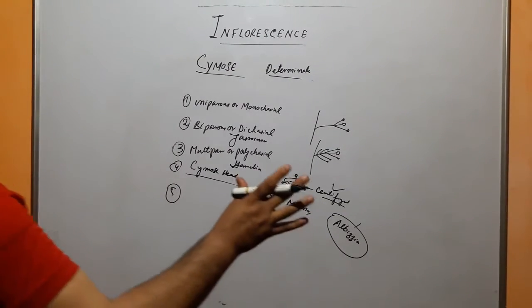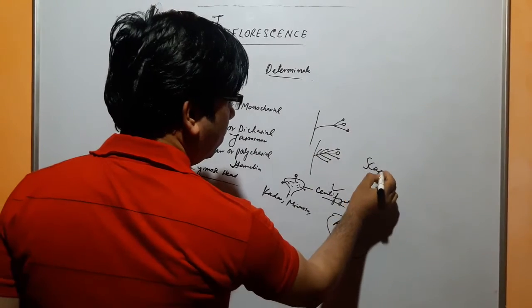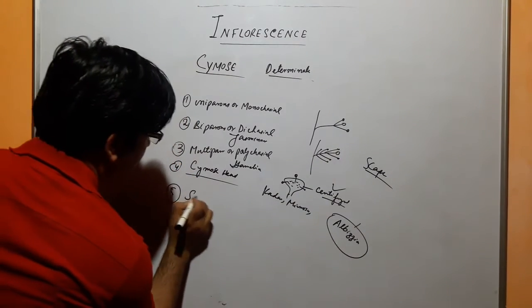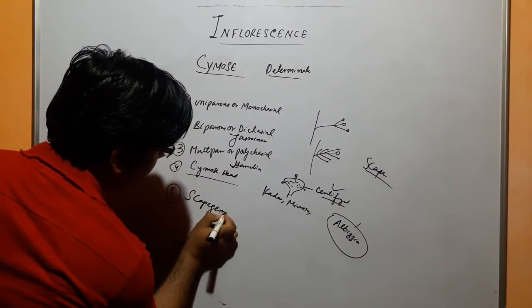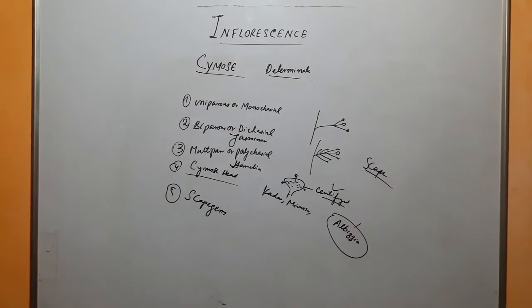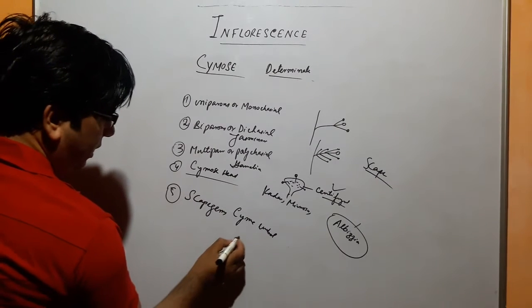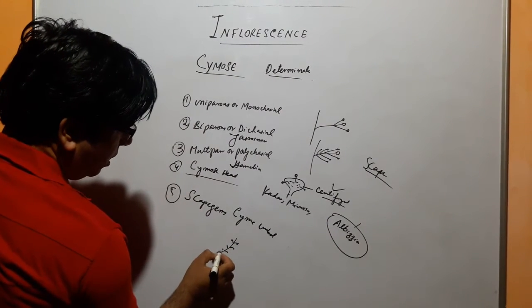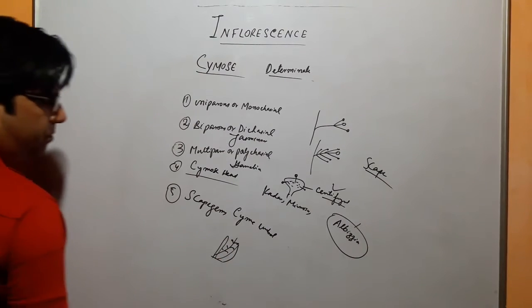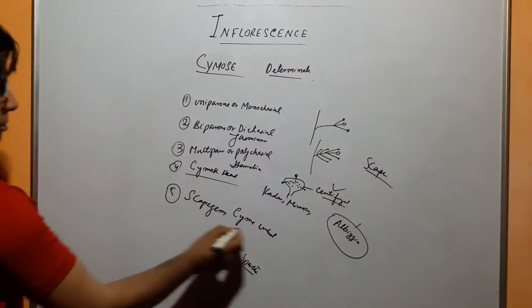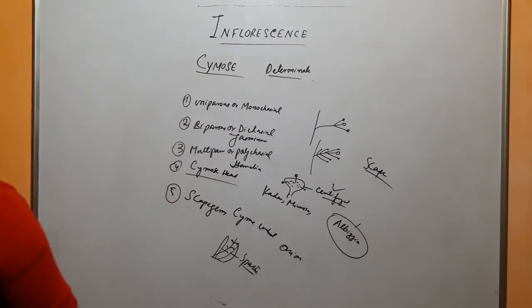The last we have, which I have told you in the onion, in cymose head is a scape. A scape is a leafless branch. That's why it is called scape-cymose. We have flowers on that scape, and a long bract cover called spathe. So this is the onion plant. With this we complete cymose type.